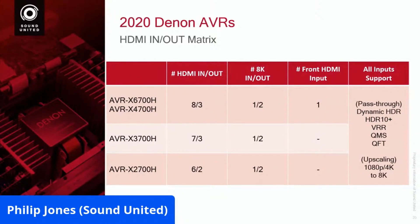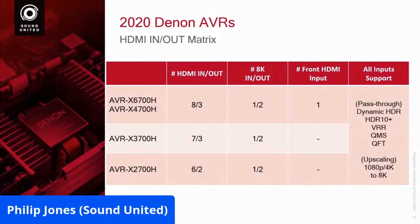All inputs support those features. While there's only one 8K input that supports the high bandwidth of 40 gigabits per second, all the other inputs support all of those other enhancements — Variable Refresh Rate, Quick Media Switching, all that stuff. And all of the other seven inputs can be upscaled from HD or 4K up to 8K using the TV's internal upscaling.